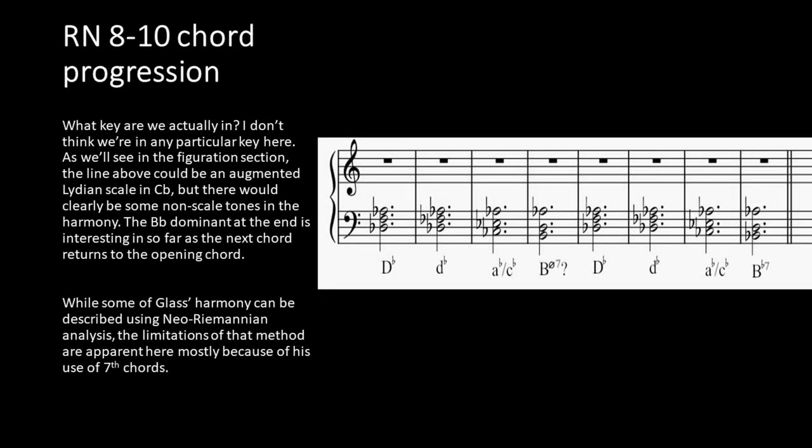Let's look at rehearsal numbers eight through ten. What key are we actually in? I don't think we're in any particular key here, actually. As we'll see in the figuration section, the line above could be an augmented Lydian scale in C-flat, but there would clearly be some non-scale tones in harmony. The B-flat dominant at the end is interesting, insofar as the next chord returns to the opening chord. While some of Glass's harmony can be described using Neo-Riemannian analysis, the limitations of that method are apparent here, because mostly he's using seventh chords, and Neo-Riemannian analysis really only extends towards triads.